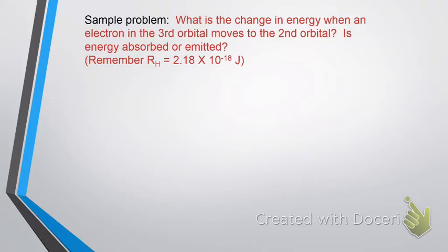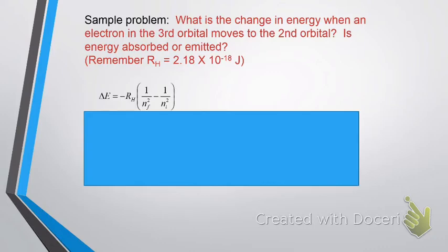So, how does this work? First, you write the equation, of course. Delta E is equal to minus RH times 1 over the n final squared minus 1 over the n initial squared. So, what is the n final here? Well, the n final is 2 and the n initial is 3.